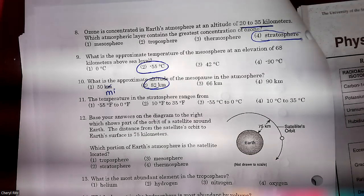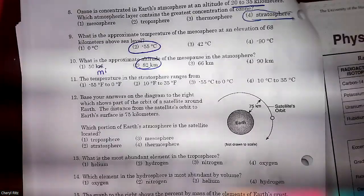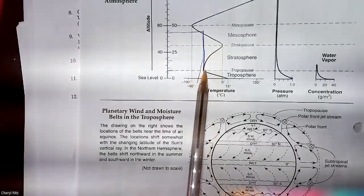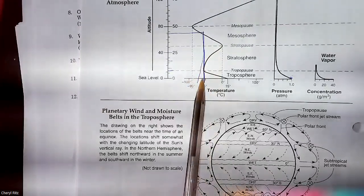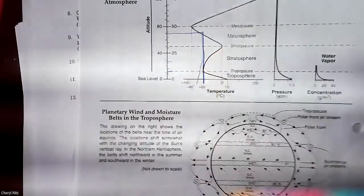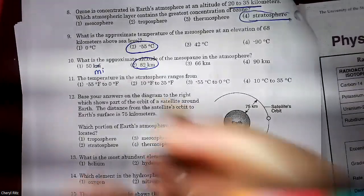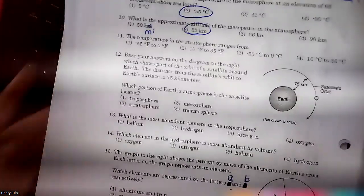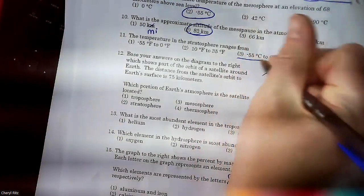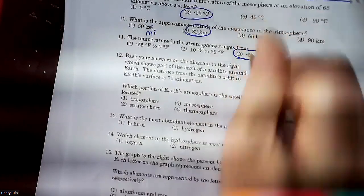The stratosphere temperature ranges — the stratosphere is right here. The coldest is negative 55 and it warms up to zero. Negative 55 to zero — they did it again and I almost fell for it. Number 11 is answer 3.